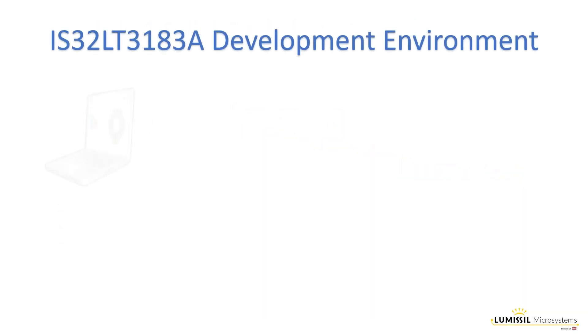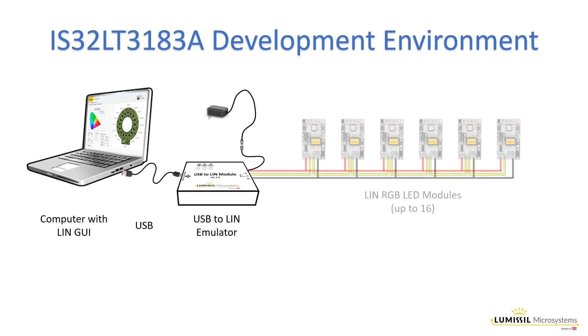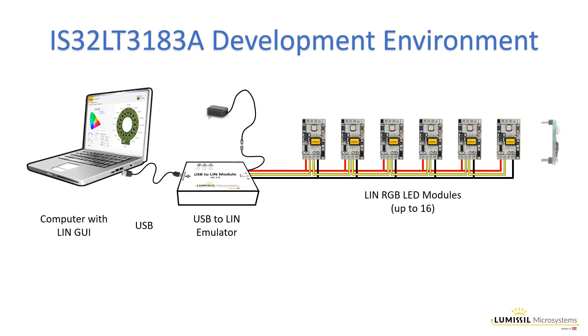The development environment consists of a Windows-based GUI that communicates over a USB cable to the Lumissil LIN emulator box, powered by a 12-volt DC adapter. The emulator operates as the LIN commander node and sends message frames to the IS32LT3183A LIN responder nodes over three wires. Communication is over a single wire, leaving the other two wires for 12-volt power and ground. In some cases, the vehicle's chassis is used as the current return path to eliminate the ground wire.